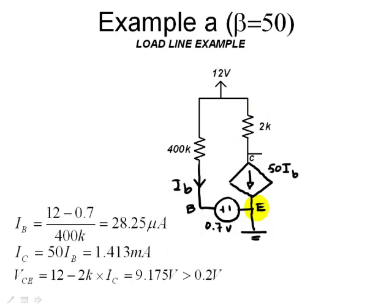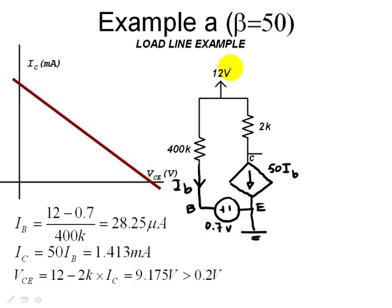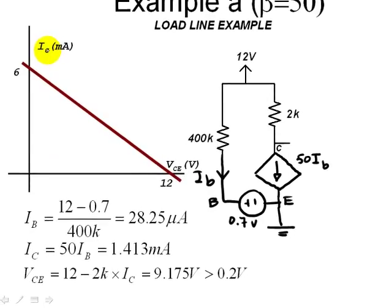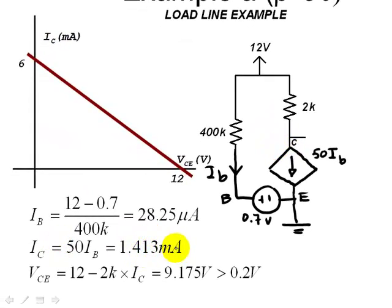There is more. We want to find the load line for this circuit. The load line is a line drawn in the plane of I in the collector versus the voltage collector emitter. That is the line that hits the horizontal axis at VCC, 12 volts, and the vertical axis at 12 divided by 2 kilos, 6 milliamps. On that line, we will identify the Q point, the point of operation of the transistor. But we already know what is the current of the transistor at the Q point. We computed that it is 1.4 milliamps. And we know what is the VCE of the transistor at the Q point. We also computed that before. That is 9.2 volts.